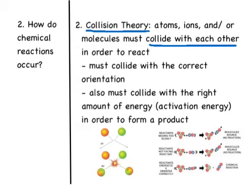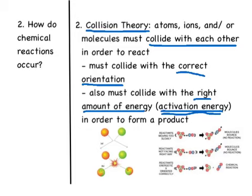Remember, they must collide with the correct orientation — that means they have to collide facing the right way with each other. They also have to collide with the right amount of energy. That's what we called activation energy: the energy needed in order for the reaction to occur. In this example, we've got two molecules that collide, but they didn't collide with the correct energy or the correct orientation, so they just bounced away from each other — a chemical reaction did not occur.